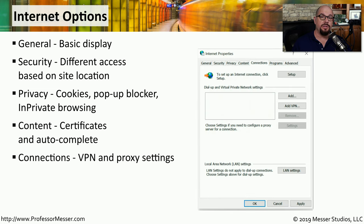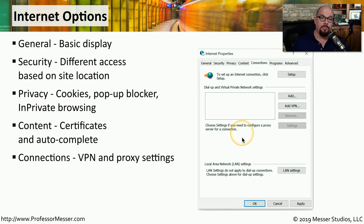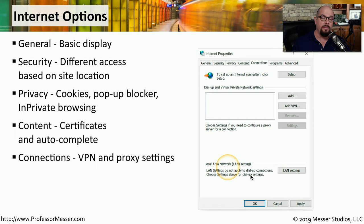If you're connecting to the internet over a VPN or proxy, you may need to make changes in the Connections tab. This is where you would set up VPN information, configure proxy server information if your proxy servers are local on your network, and you can also modify any of the local area network settings so that they're compatible with these configurations as well.